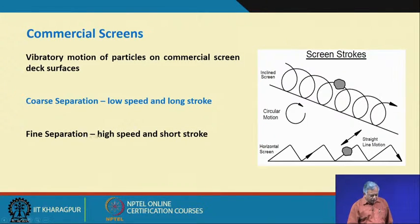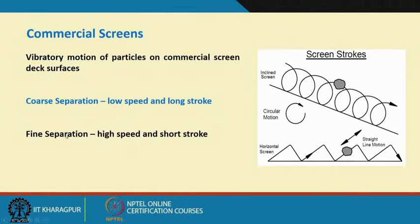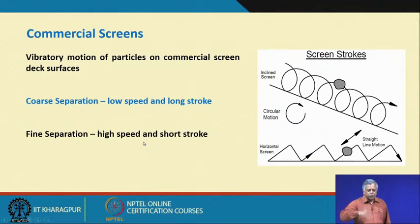For coarser separations you need low speed and long stroke — a long stroke because of the bigger mass, you need to lift the particle to a much higher height so that it changes orientation, since larger particles settle through air faster than smaller ones. For fine separation, high speed and short stroke: you do not need that much throw because the settling velocity is less, giving many probabilities of changing orientation.